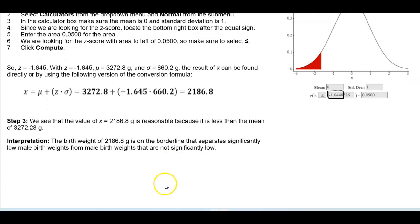So now we can find the interpretation. The birth weight of 2,186.8 grams is on the borderline that separates significantly low male birth weights from male birth weights that are not significantly low.